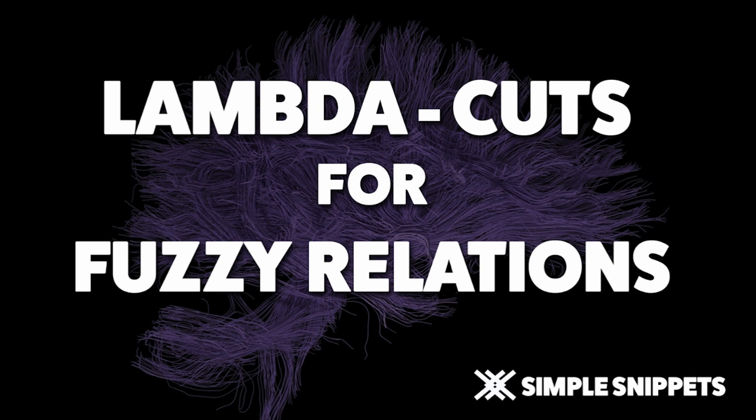If you've seen the previous video tutorial, we understood the concept of lambda cuts for fuzzy sets. This is a slightly different topic because this will be lambda cuts for fuzzy relations. If you haven't seen that video, I recommend you check out this playlist so that you know exactly what lambda cuts mean. In short theory, lambda cuts for fuzzy sets or fuzzy relations is a defuzzification process wherein we convert a fuzzy set to a normal crisp set. If you don't know what these mean, you can check out the previous video tutorials from this playlist. Let's directly get into the numerical aspect.